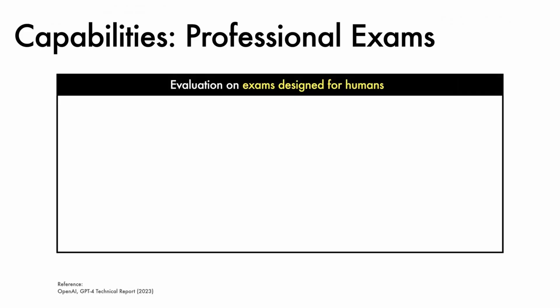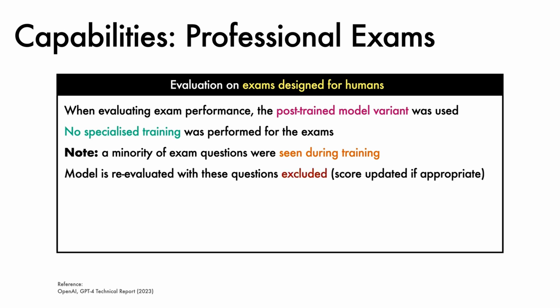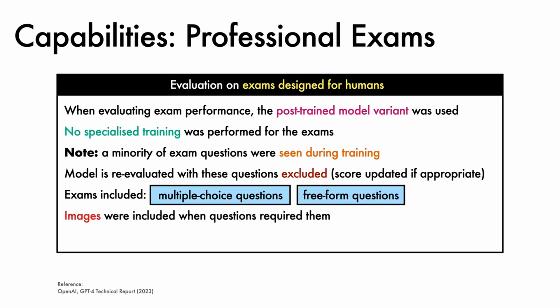GPT 4 model capabilities on a range of benchmarks beginning with exams designed for humans. For exam evaluations, the post-trained model variant was used, however, no specialized training was performed to prepare for the exams. One technical point to note is that a minority of exam problems were seen during training. For such cases, the model is re-evaluated with these questions excluded, and then the score is updated to be the lower of the original score and the score with these questions excluded. The exams themselves included multiple-choice questions and free-form questions. Images were provided to the model when the questions required them. Finally, the evaluation setup and prompt design were developed on validation exams with final results reported on held-out exams.